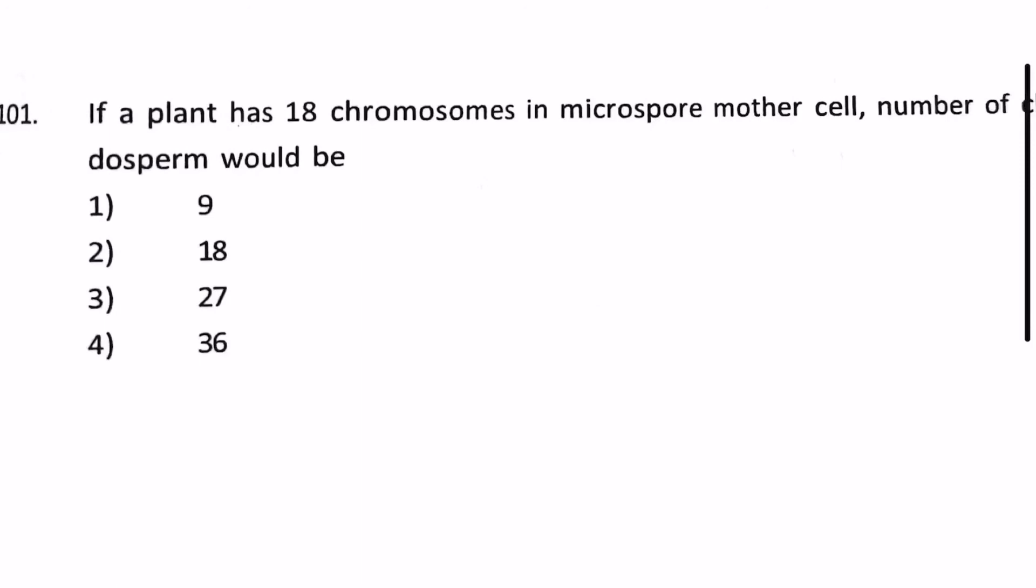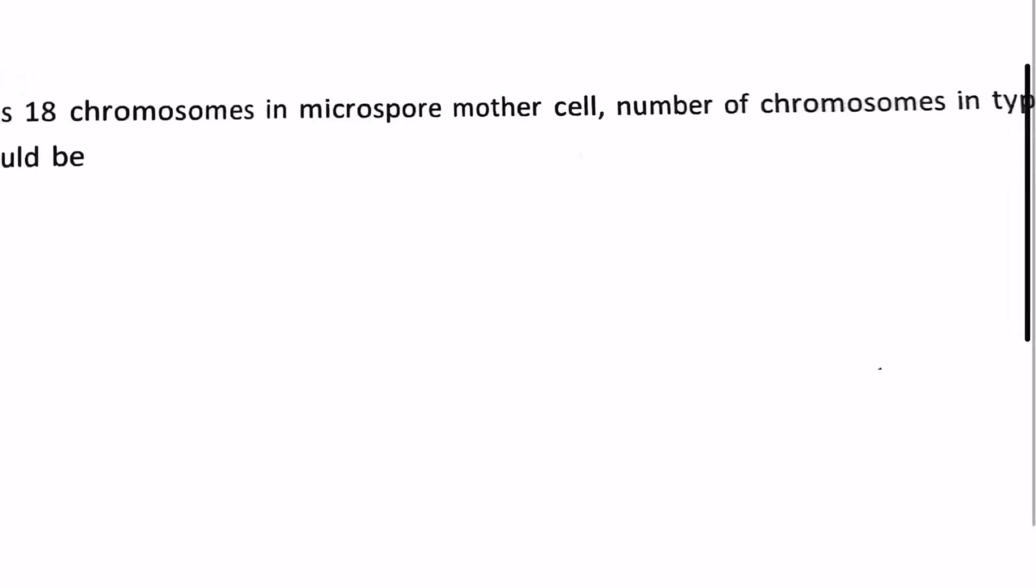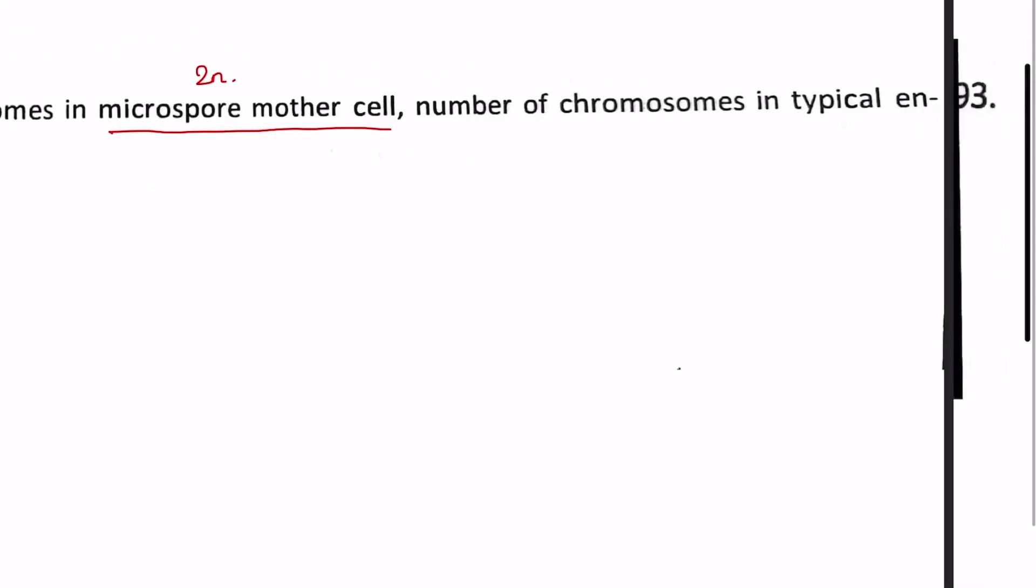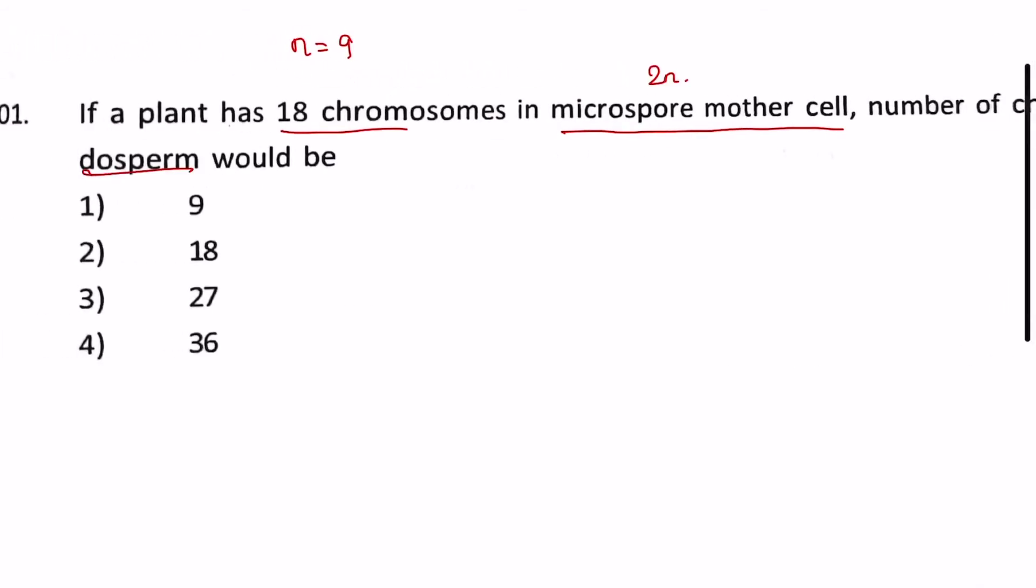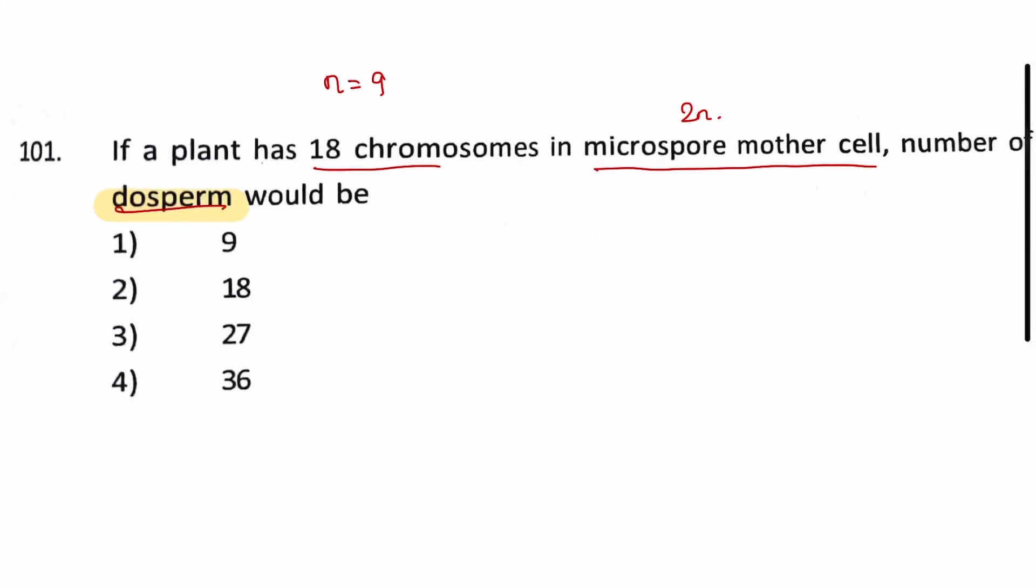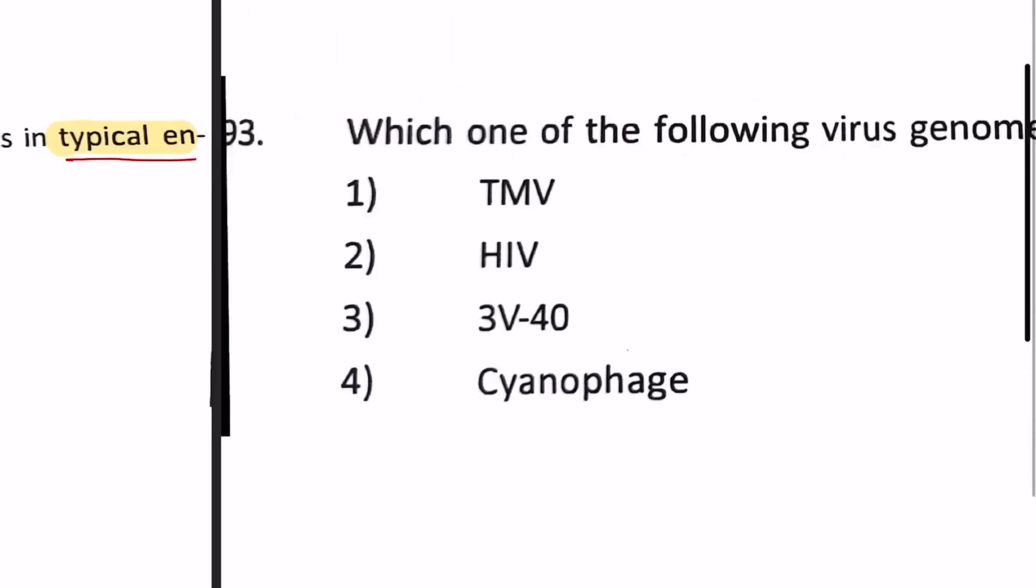Our next question: if a plant has 18 chromosomes in microspore mother cell, the number of chromosomes in typical endosperm would be? It's a question of ploidy levels. We see that microspore mother cell must be 2n ploidy, so it will be 2n = 18 chromosomes, that means n equals 9 here. Now in typical endosperm they have asked. The hint is they clearly mentioned a typical endosperm. Well a typical endosperm has a ploidy level of 3n, therefore it will be 3 into 9 which is equal to 27 chromosomes. So our answer will be 27.